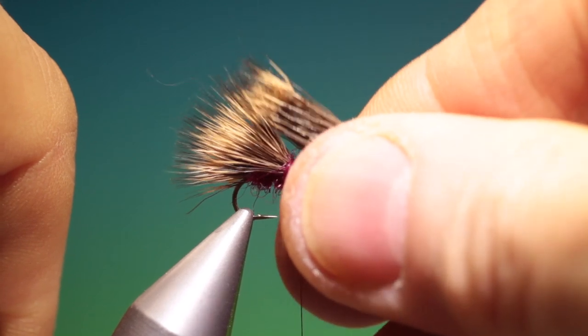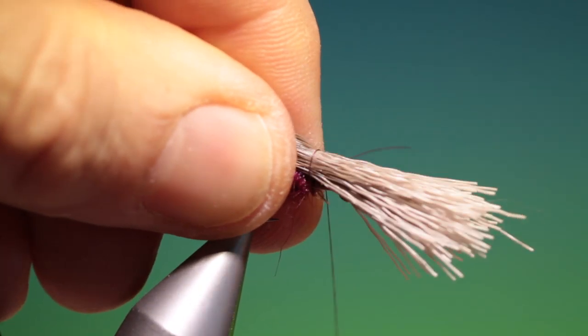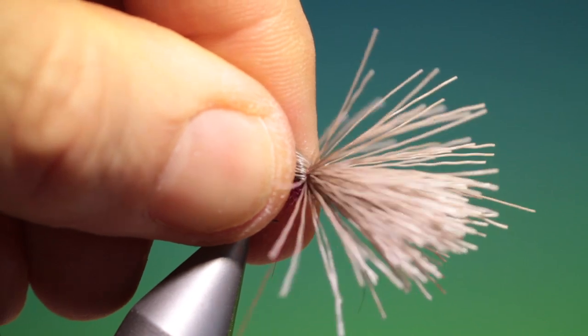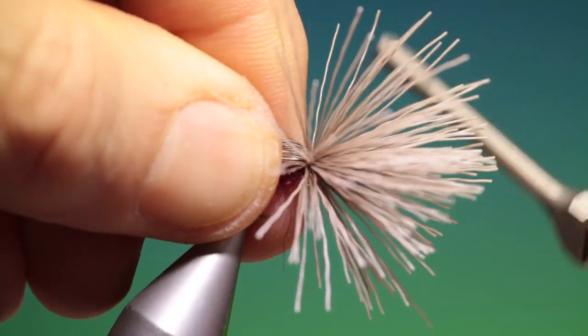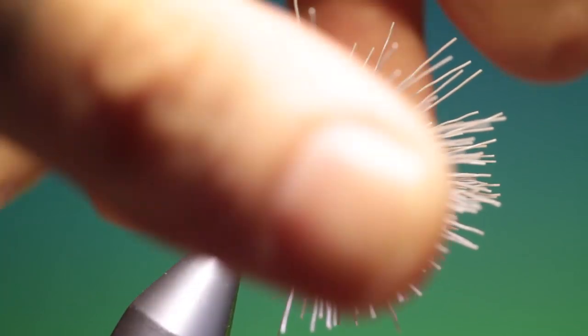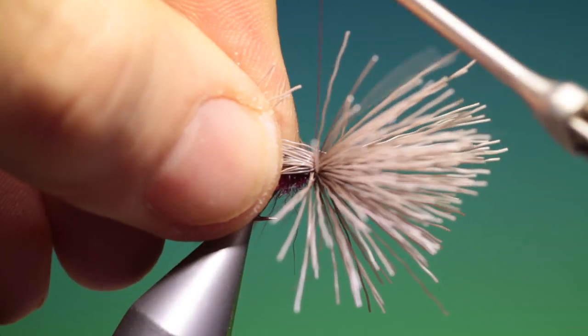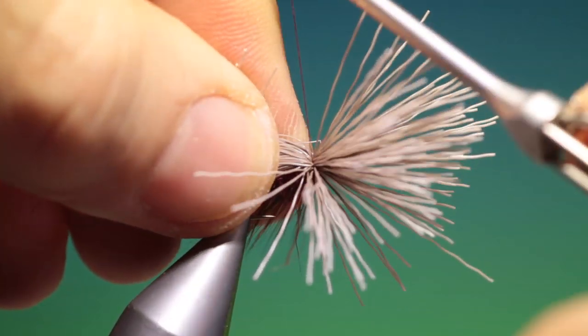Another bunch of deer hair. Twice around. Tighten. Now what I like to do with this front bunch is pull the hairs back like this and go through.